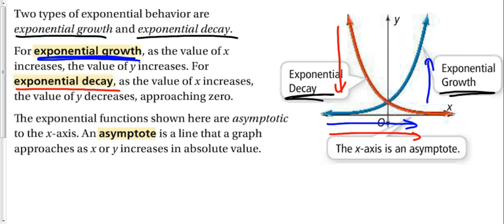Both of these approach the x axis but never touch it. That's what's called asymptotic. So an asymptote is a line that the graph approaches as x or y increases in absolute value. So as x goes up, it approaches that line but it never touches. That is called an asymptote.